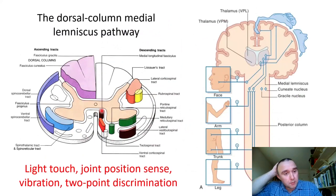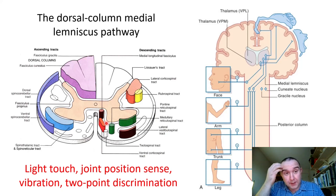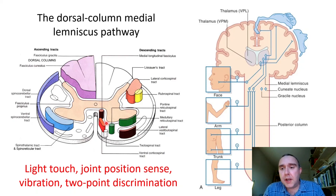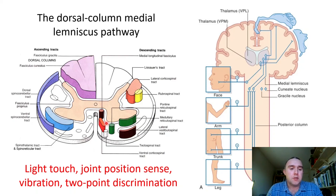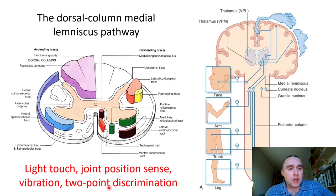Let's think about the dorsal column medial lemniscus pathway first. This is its full name — the dorsal column medial lemniscus — as we shall see shortly. It's actually a combination of two, indeed three, separate pathways, reflecting the three orders of sensory neurons. The dorsal column pathway carries these modalities: light touch, joint position sense (i.e. proprioception), vibration, and two-point discrimination. The dorsal columns are found in the dorsal funiculus.